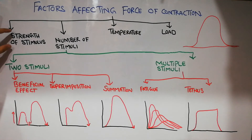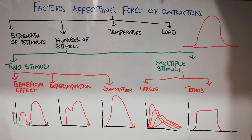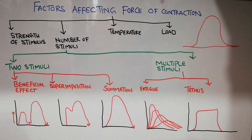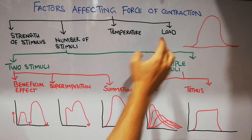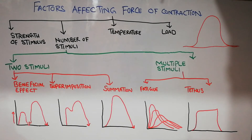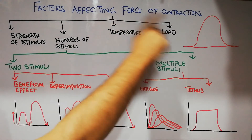The first factor is the strength of stimulus — whether the stimulus is weak or strong. The second is the number of stimuli. The third is the effect of temperature on the force of contraction. And the fourth is the effect of load — the amount of weight placed on the muscle and its effect on the force of contraction.